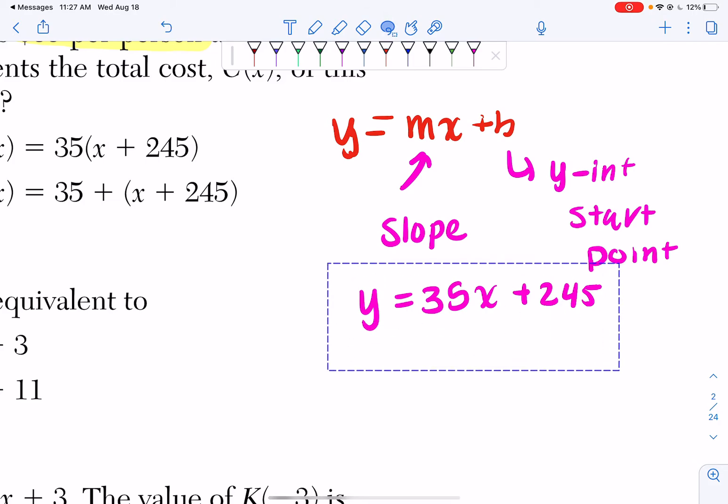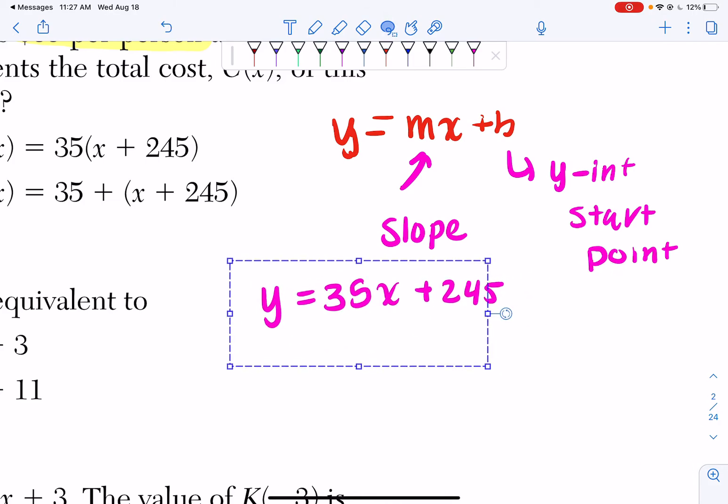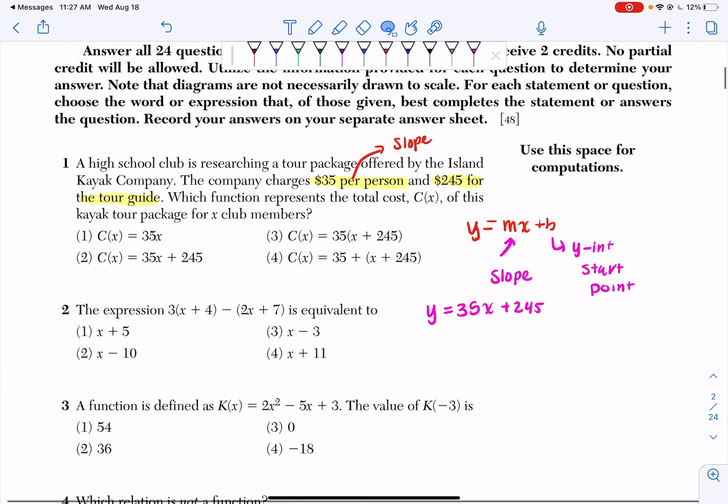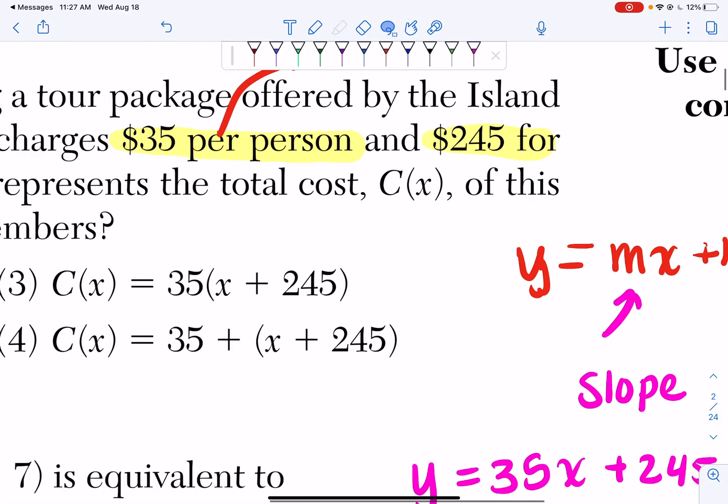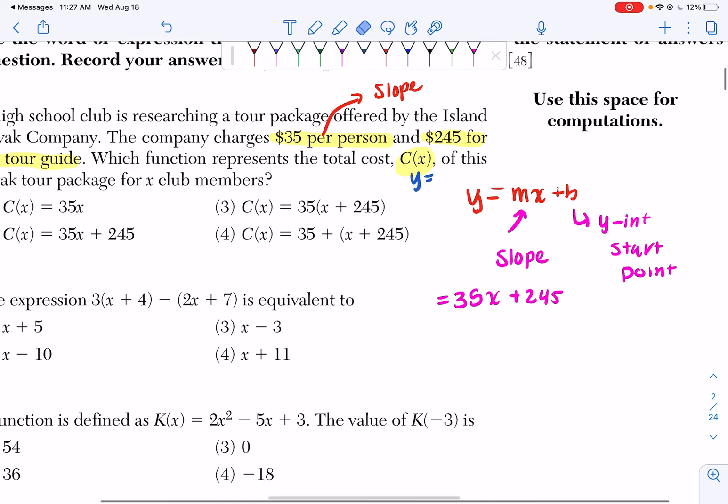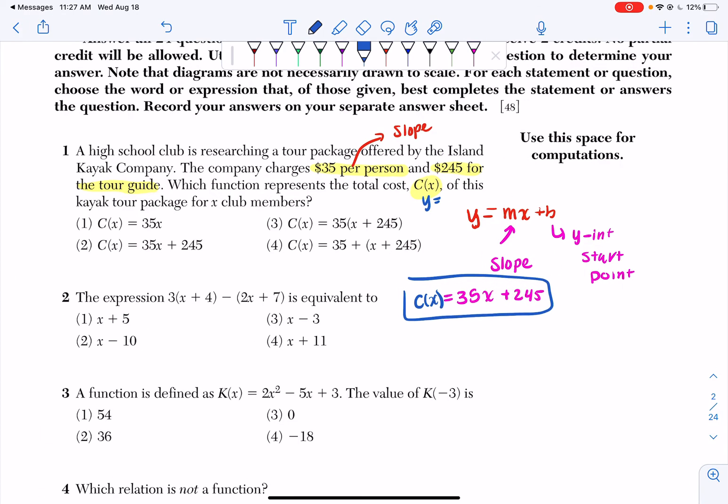None of my equations say y equals, they say c of x. Remember whenever you have c of x or anything like this, this is just a fancy way of saying y equals. So I can get rid of my y and put c of x, and my final answer would be c of x equals 35x plus 245. That's our final answer.